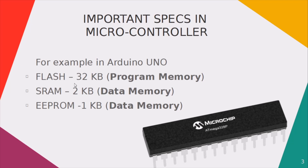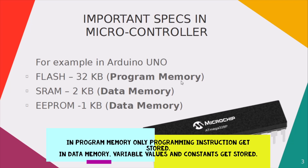When it comes to flash memory, we actually use it as program memory. Static RAM and EEPROM we actually use as data memory. Two things we have to understand: what is actually meant by program memory and data memory. Program memory is the memory where programming instructions get stored, and data memory is where variable values and constants get stored.